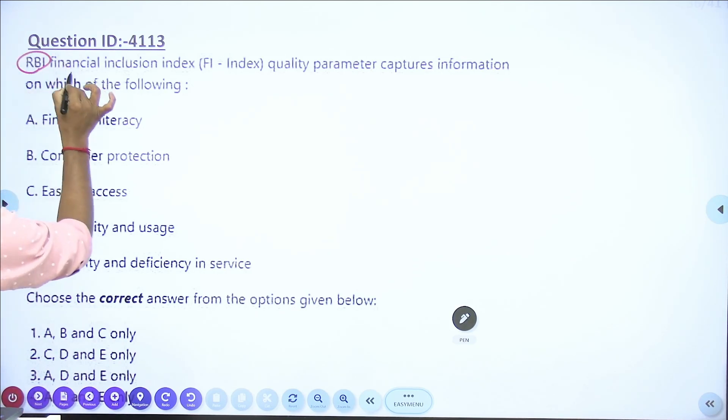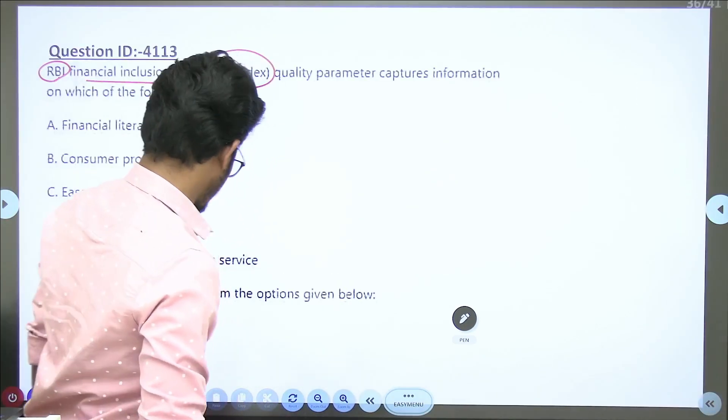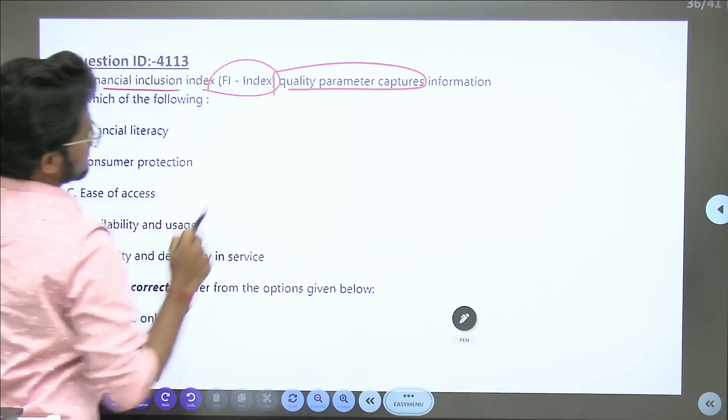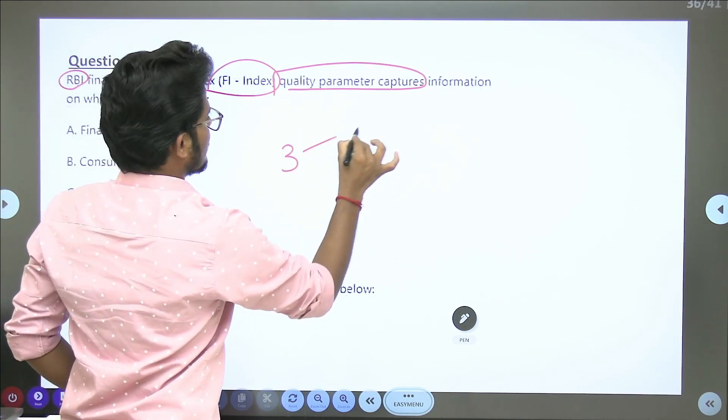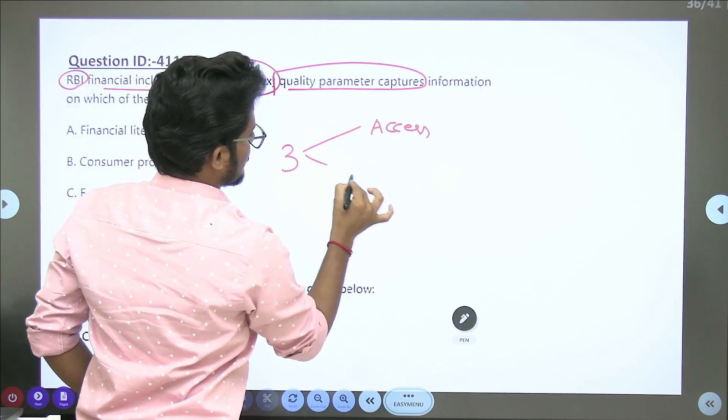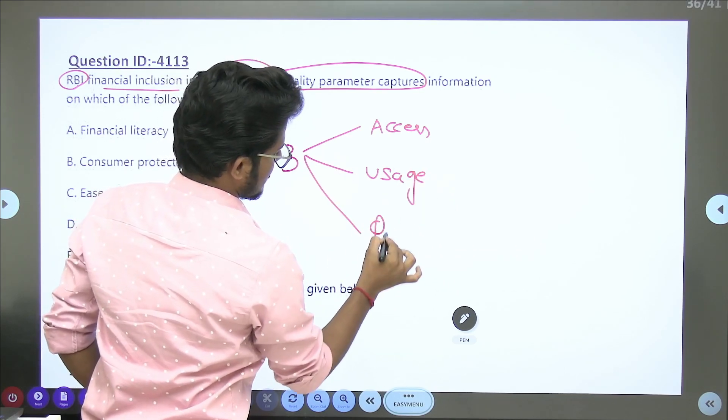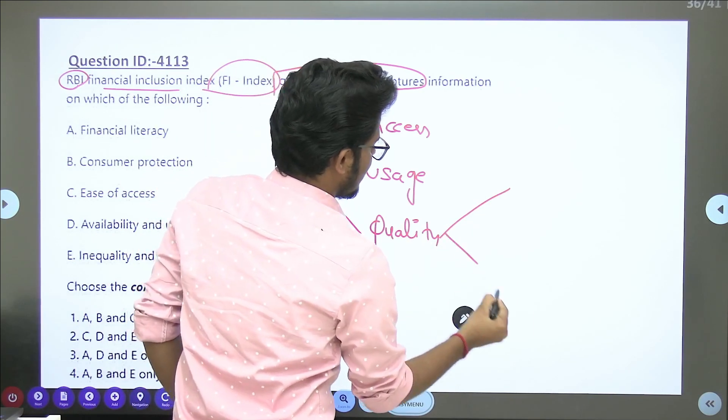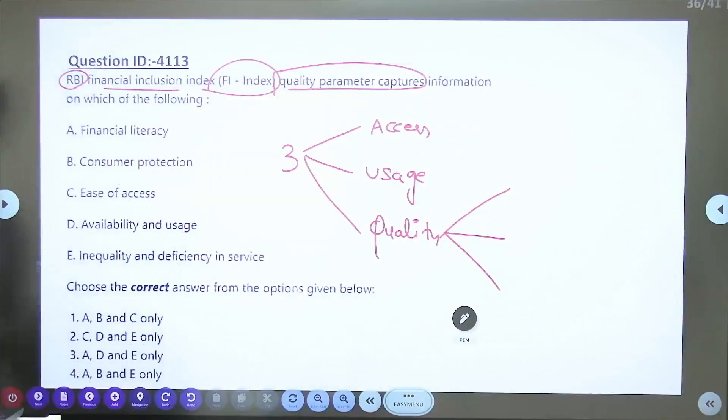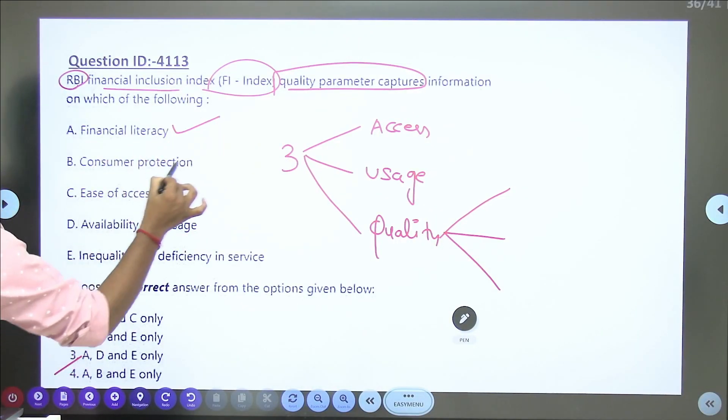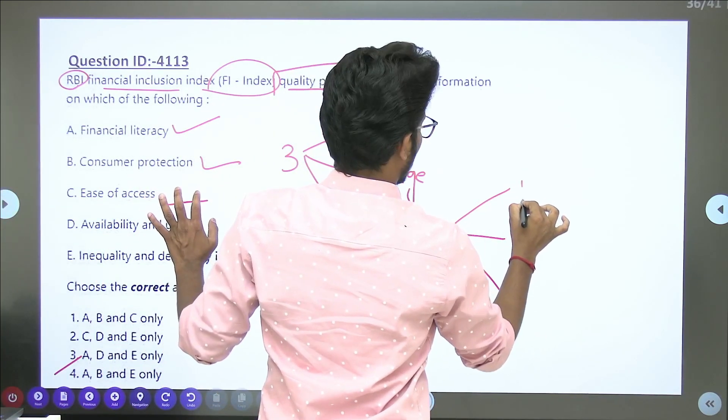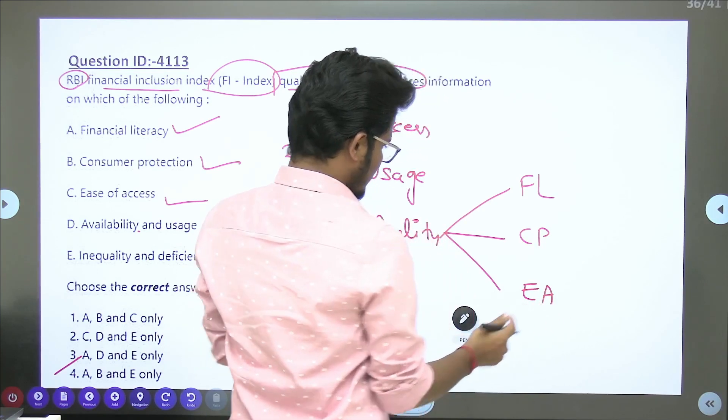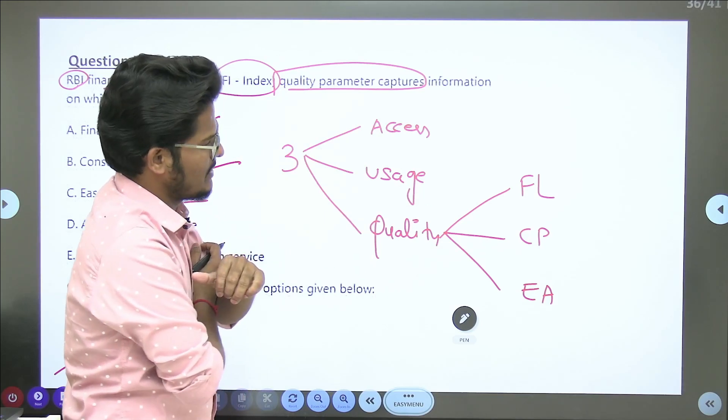Next, RBI financial inclusion index. This is an expected question before exam day. RBI is having three parameters: access, usage, and quality. The question is about what the quality parameter is going to have. Answer is D. Financial literacy, consumer protection, and ease of access. In quality, how they maintain quality? Financial literacy because everybody should know about use of product, consumer protection, and ease of access. These three things are part of quality parameter of this index.